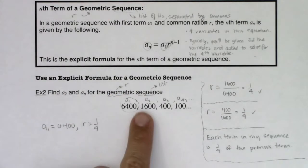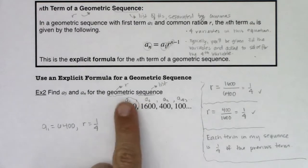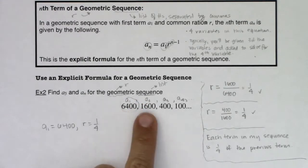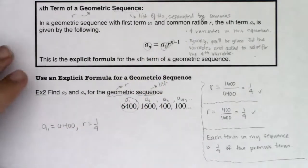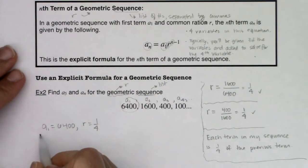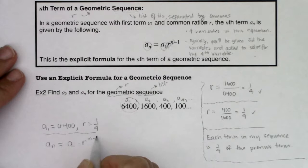So let's just keep track of what we do know. I know my first term is 6,400, and I know my r value is 1 fourth. This is a geometric sequence. It says it right there. I've actually proven it's geometric just by looking at these common ratios. So I get to use this formula. That formula is at my disposal.